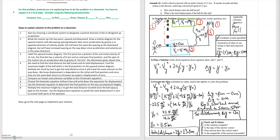So moving on to step 4 we have we need to find the total distance the ball travels and its total displacement. Find the maximum height of the ball which is the final position on the upward motion diagram. Multiply the result by 2 to get the total distance since it will travel the same amount on the way down. We know displacement is dependent on the initial and final positions and since they are the same we expect the displacement to be zero.